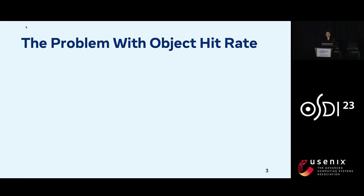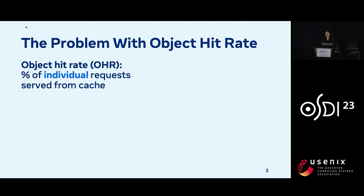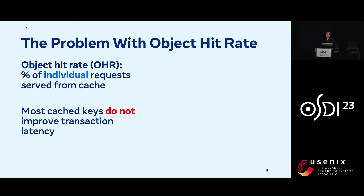This project began with the observation that object hit rate, the metric used by most popular caching algorithms, is fundamentally flawed for transactions. Object hit rate is defined as the fraction of individual requests that can be served from cache. However, we find that most caching algorithms optimizing for this metric end up storing keys that don't actually improve transactional latency.